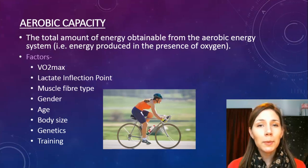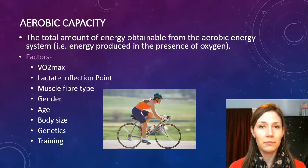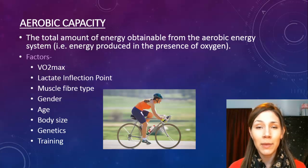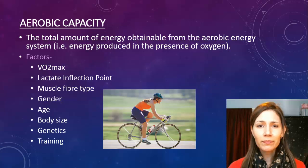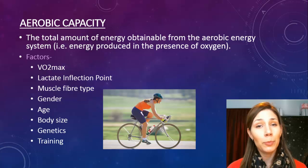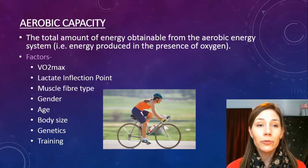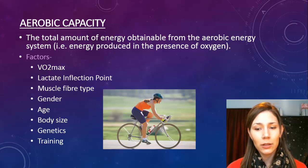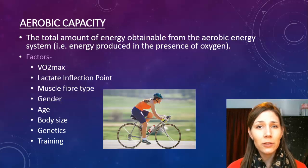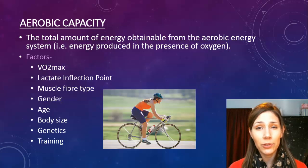Aerobic capacity is the total amount of energy obtainable from the aerobic energy system — basically any energy made in the presence of oxygen. A few things will influence it, such as your VO2 max, which is your ability to uptake and utilize oxygen. Your muscle fiber type also plays a role: if you have a larger percentage of slow twitch muscle fibers, you're more likely to enhance your aerobic capacity because those slow twitch fibers use oxygen.